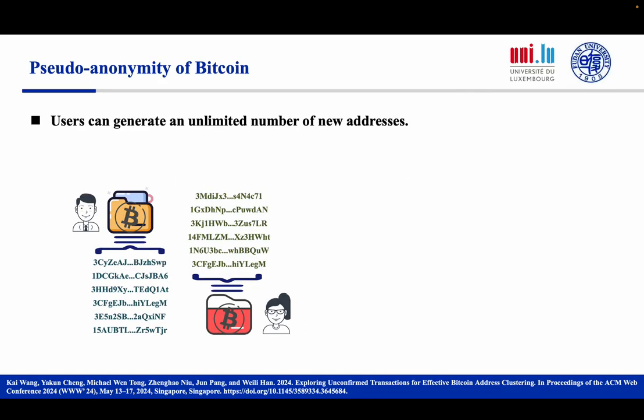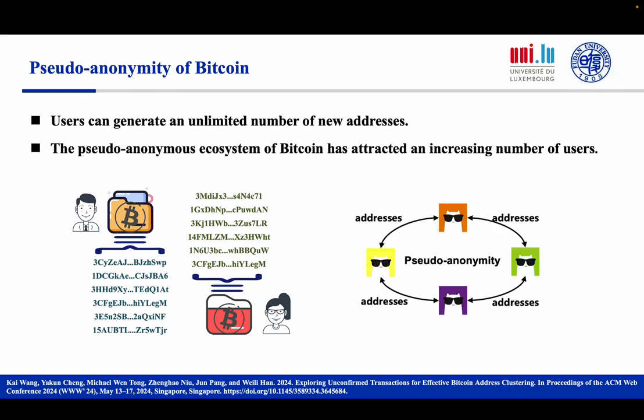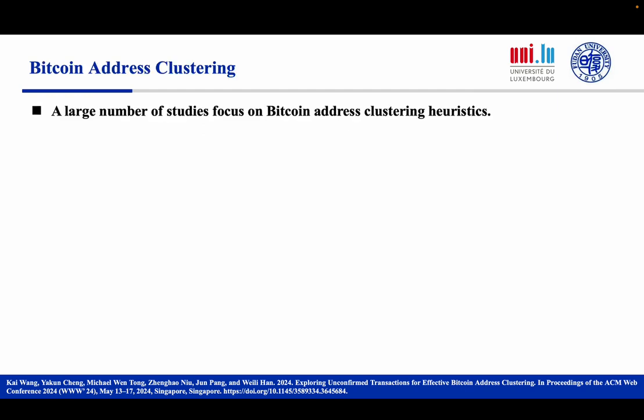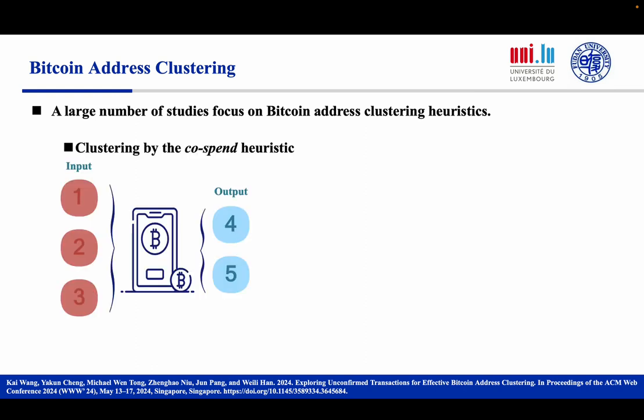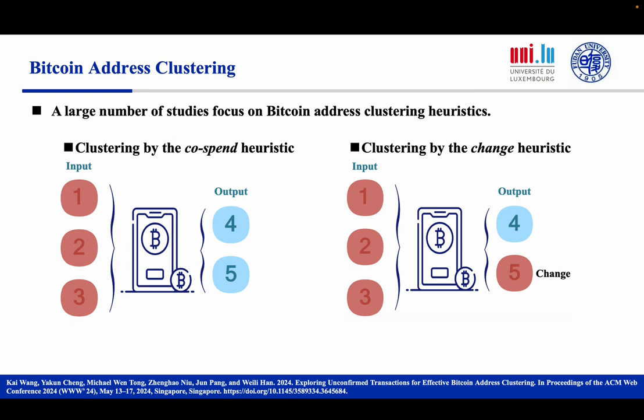In Bitcoin, users can generate an unlimited number of new addresses without revealing their real identities. The pseudo-anonymous ecosystem of Bitcoin has attracted an increasing number of users, including criminals who use Bitcoin to transfer illicit funds. To deal with such criminal activities in Bitcoin, a large number of studies focus on Bitcoin address clustering heuristics. The state-of-the-art clustering heuristics are generally categorized into two groups: the Cospend heuristic and the Change heuristic.